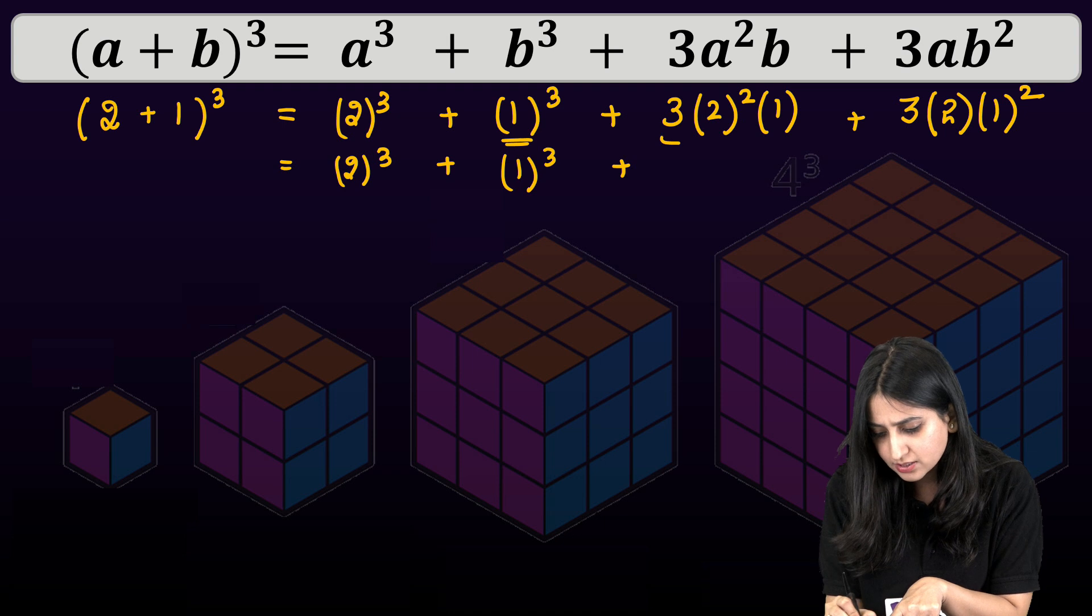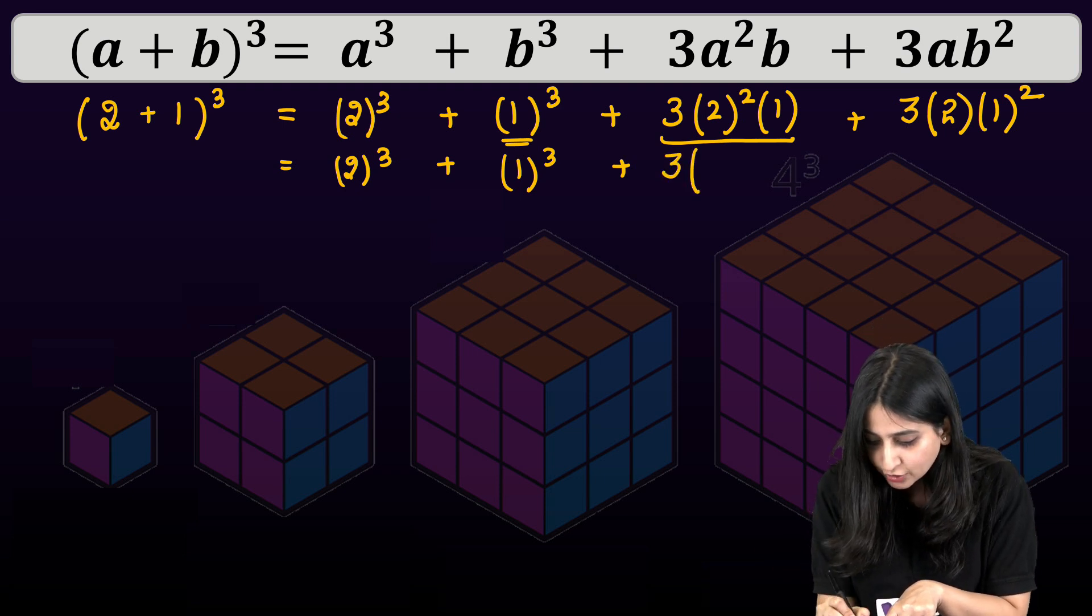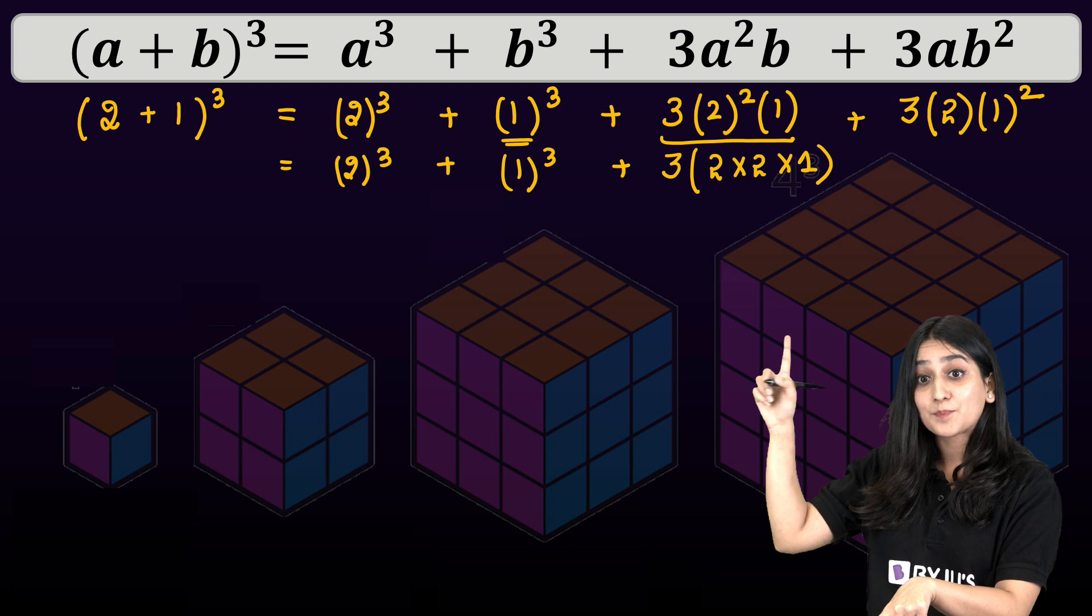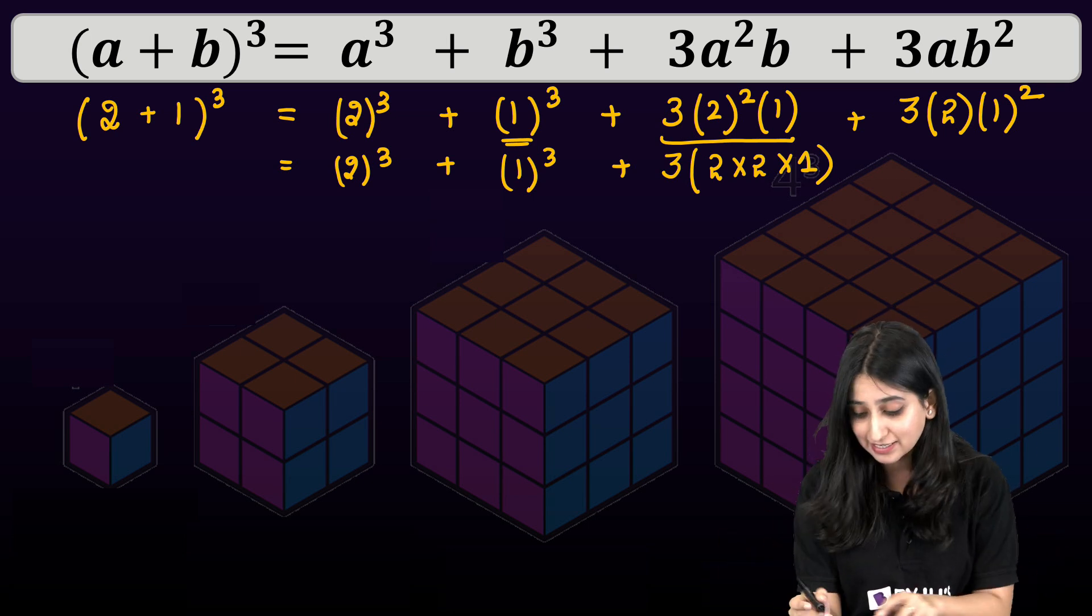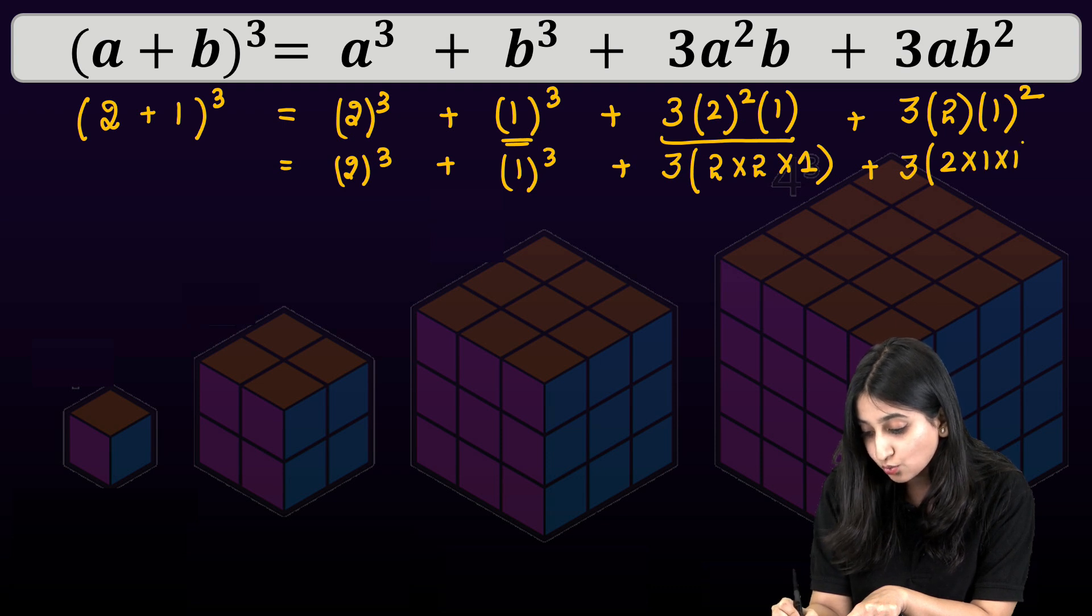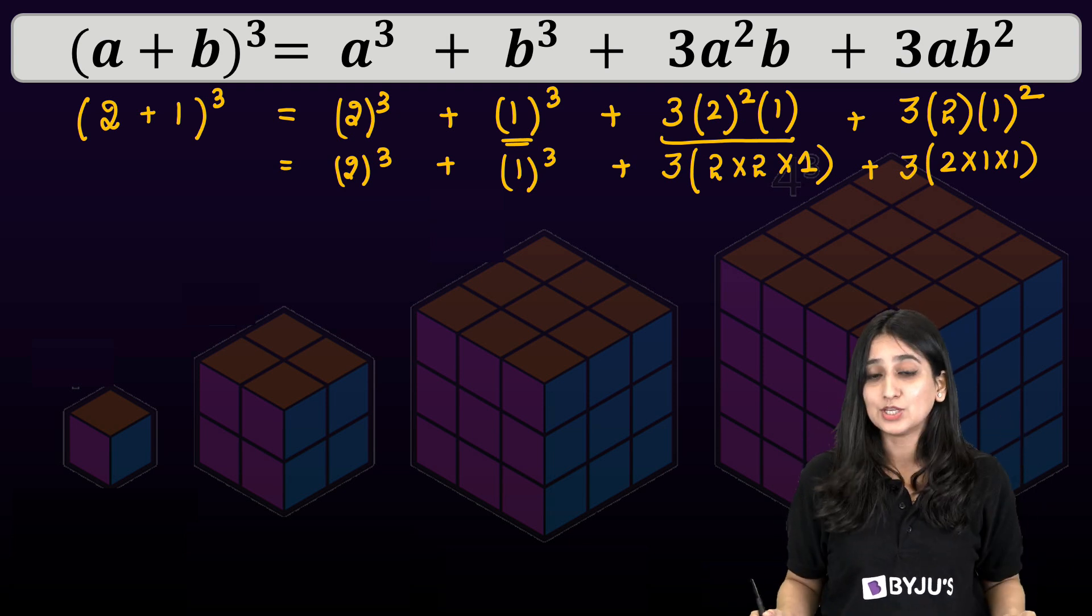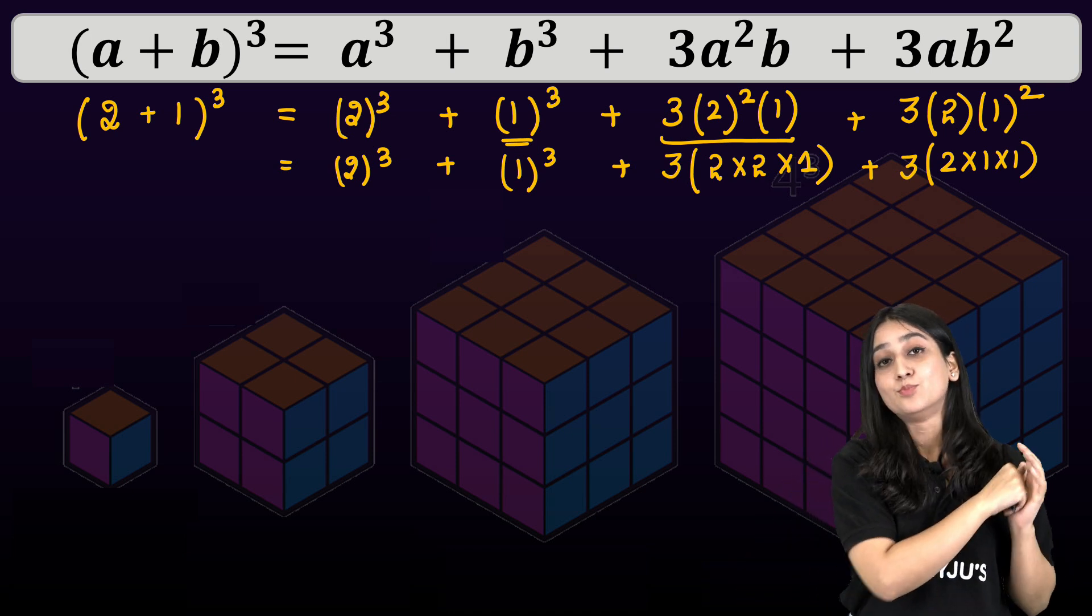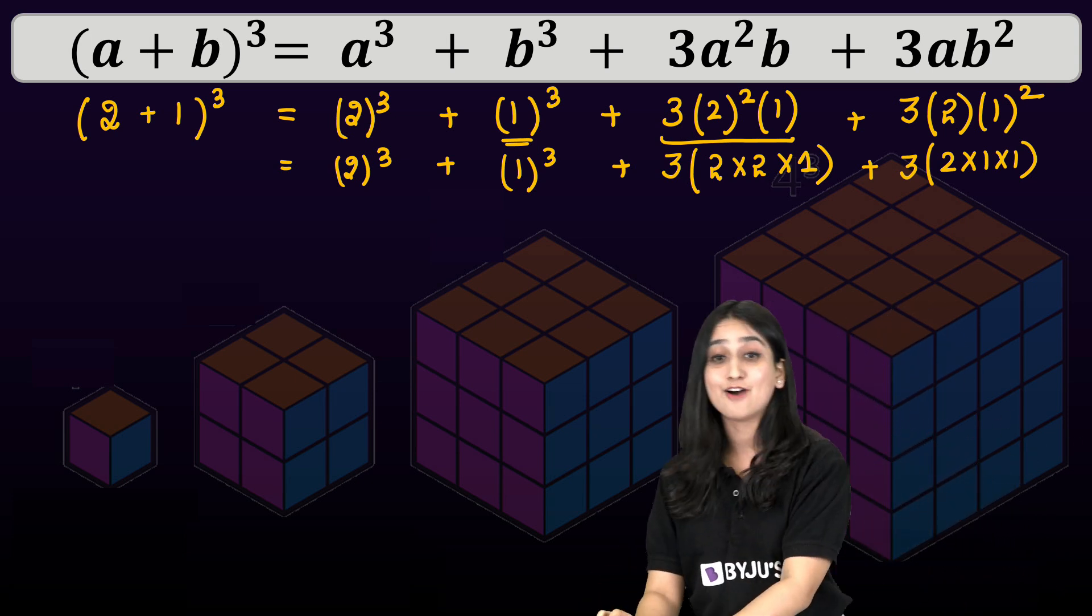But ma'am what about this term? How will I represent it using these cubical blocks? So if you see over here, can I write it like this? 2 square can be written like 2 into 2 and 1 can be written like this. So it is basically representing a cuboid with the length 2 units, breadth 2 units and height 1 unit. And similarly for this last term, we can write 3 into 2 into 1 into 1 which means I would need a cuboid with length 2 units, breadth 1 and height also 1 unit. Let's move on to the activity screen and see how we are going to visualize this using these amazing cubes I have over here.